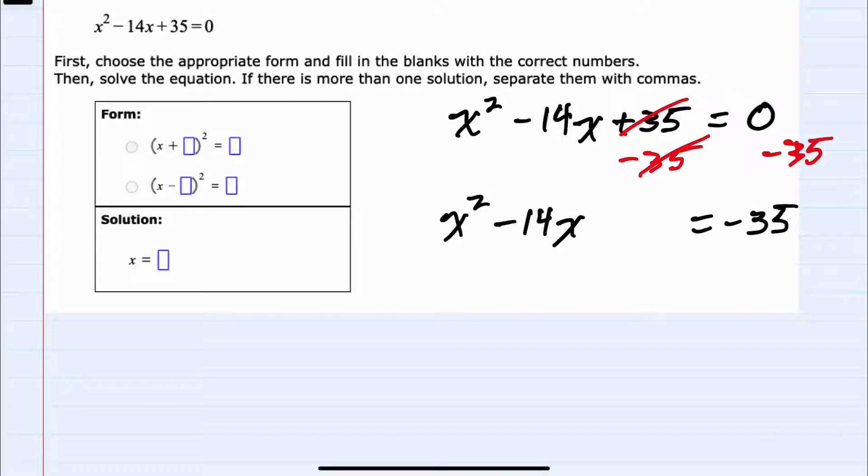Now on the left-hand side, I can complete the square by finding the value of the constant term that would make the left-hand side a perfect square. I can do that by looking at the middle term here, 14.